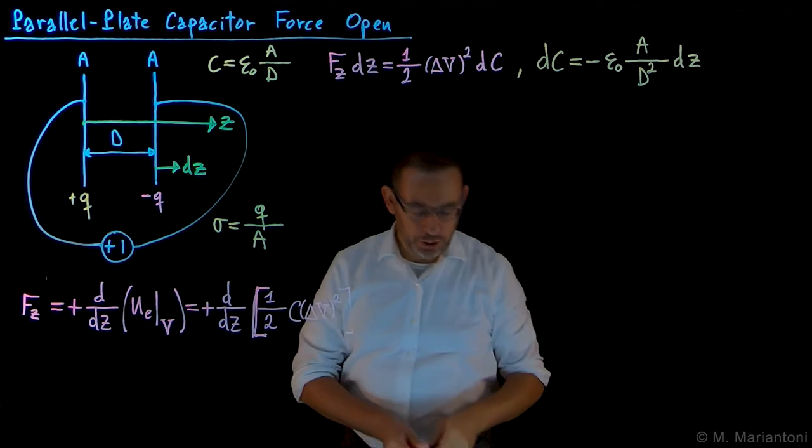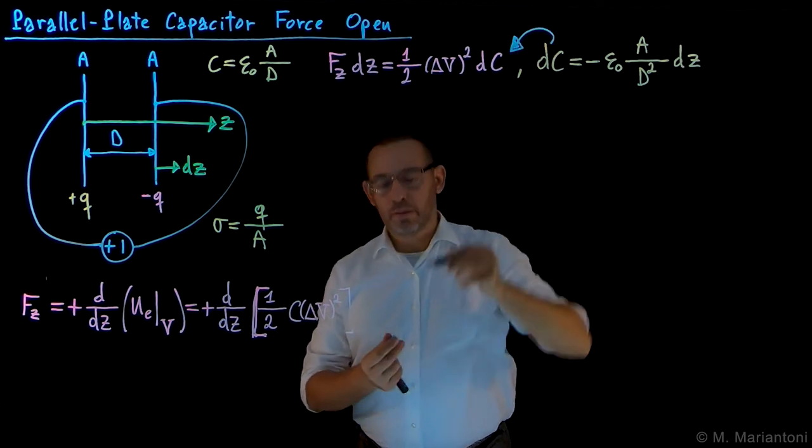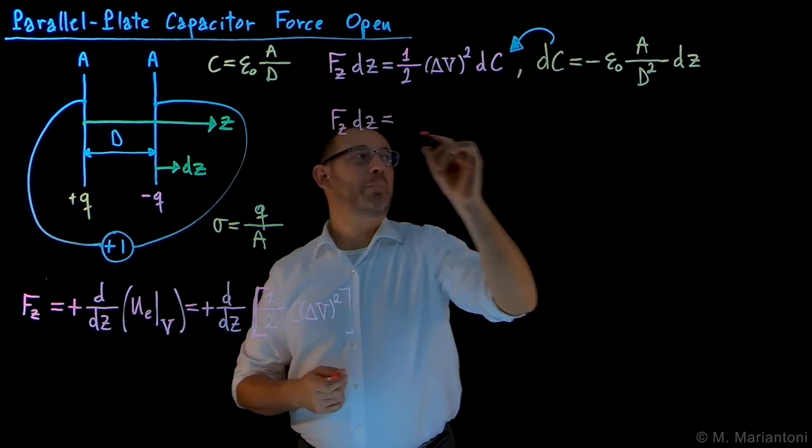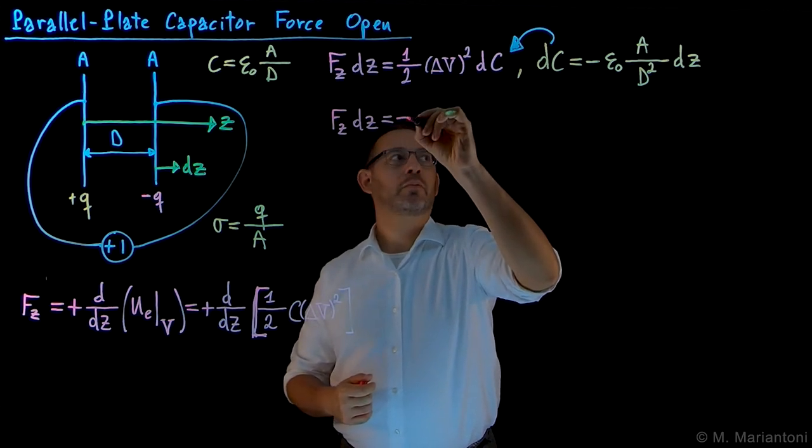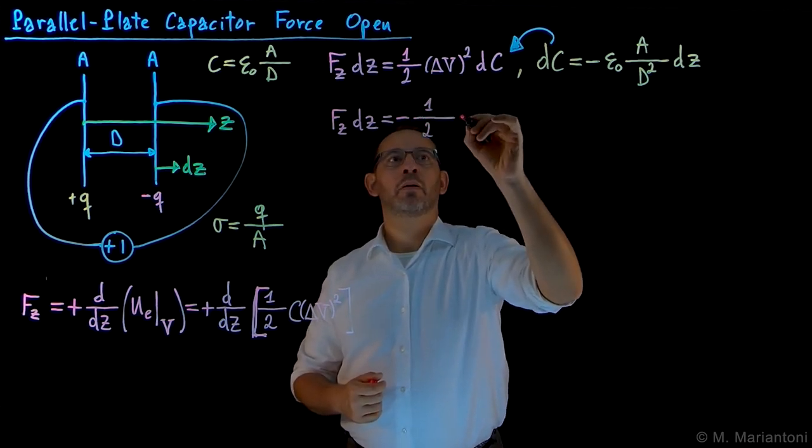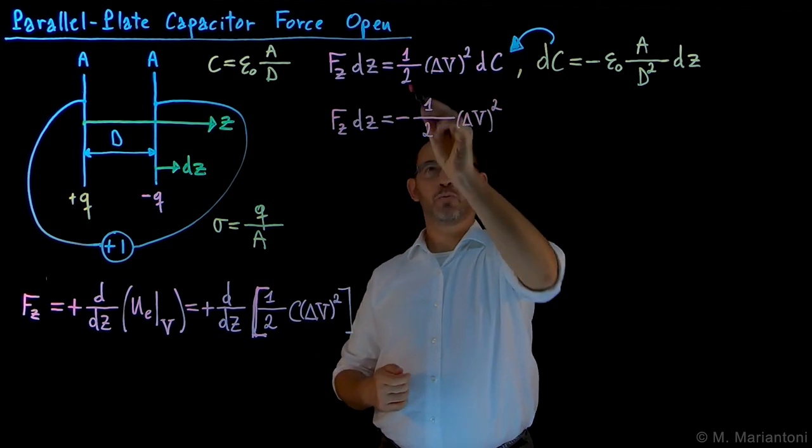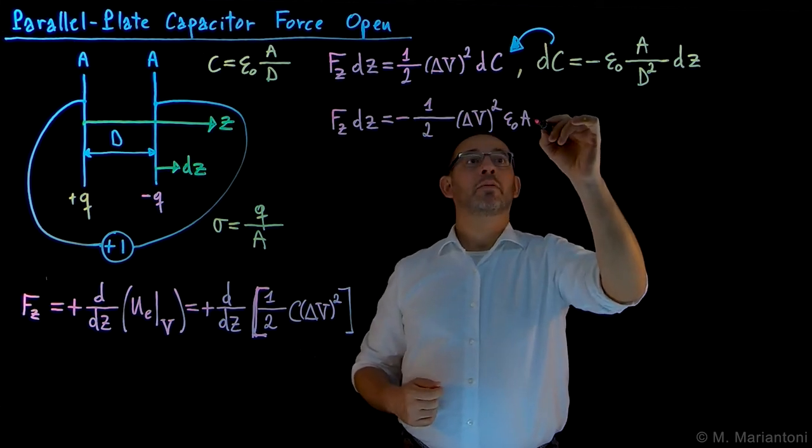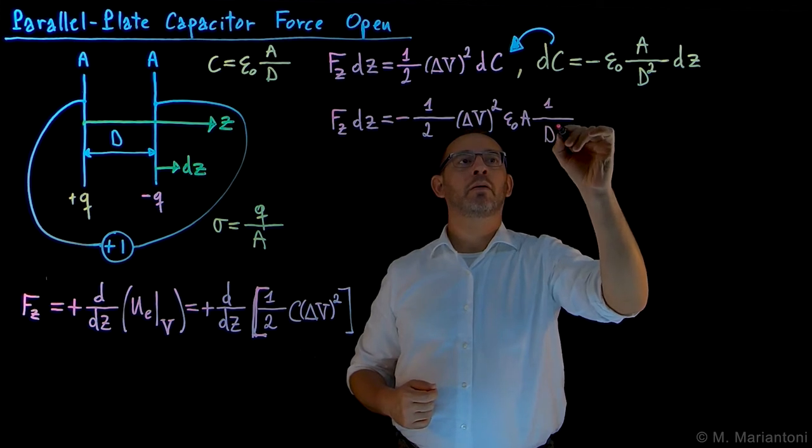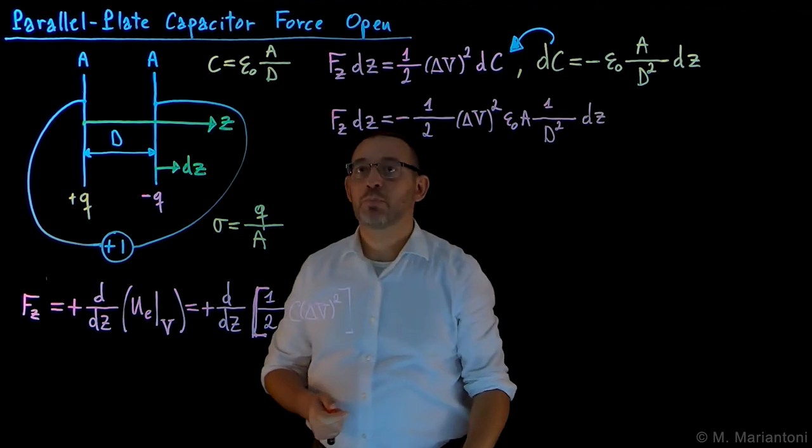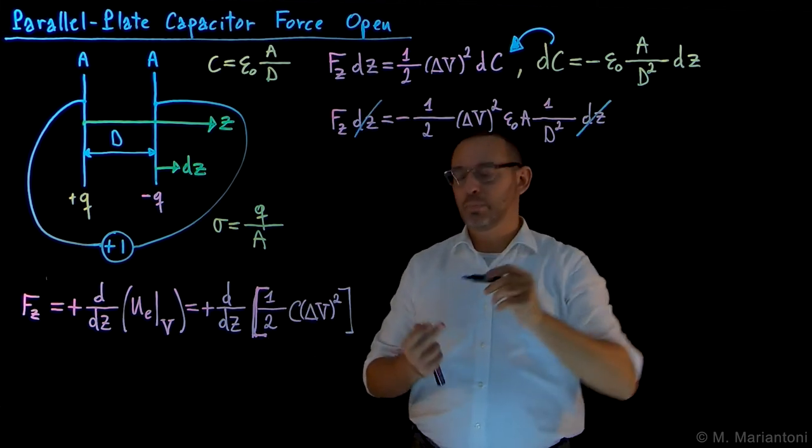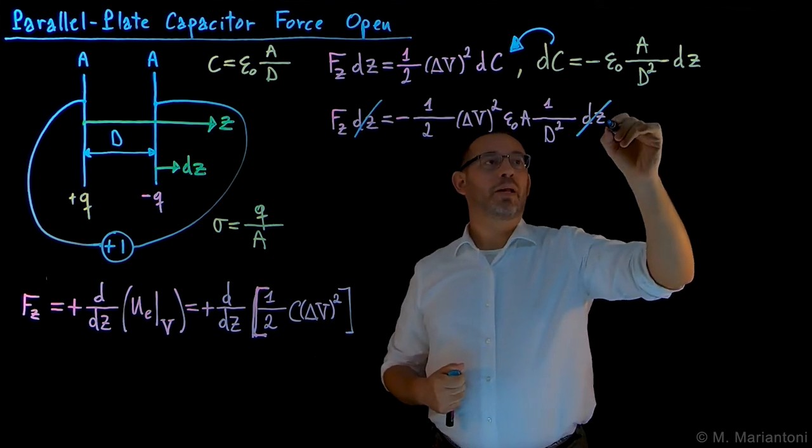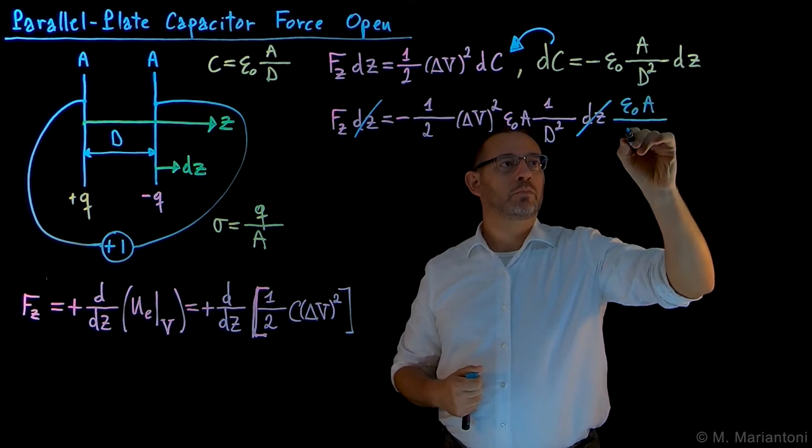We want to plug this into this equation. Therefore obtaining F_z dZ. Now I pick the minus sign from this dC definition. So I have minus one half quantity delta V squared, minus epsilon naught A divided by D squared times dZ. dZ and dZ cancel out.